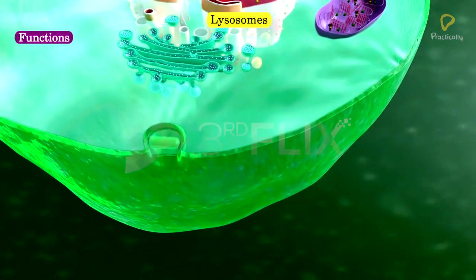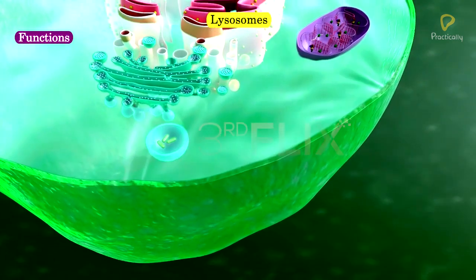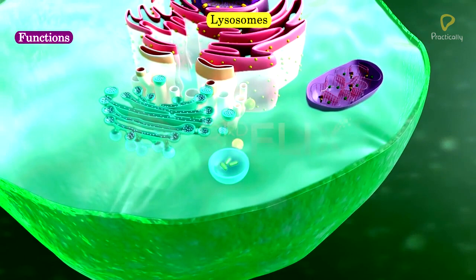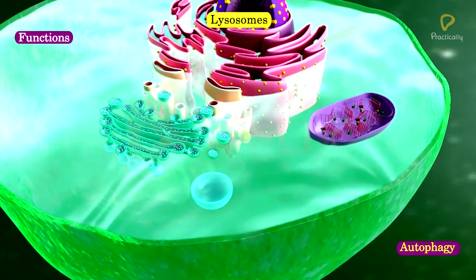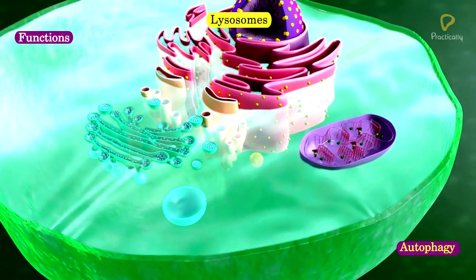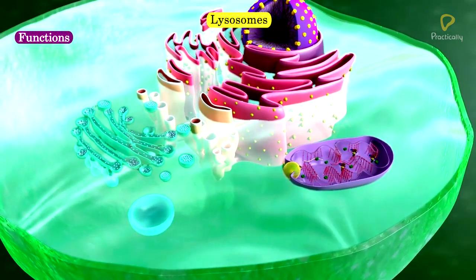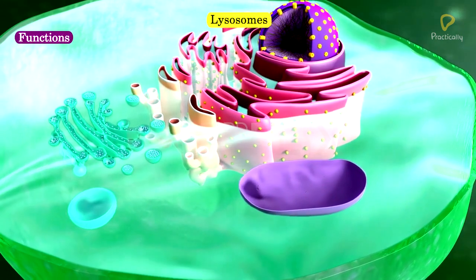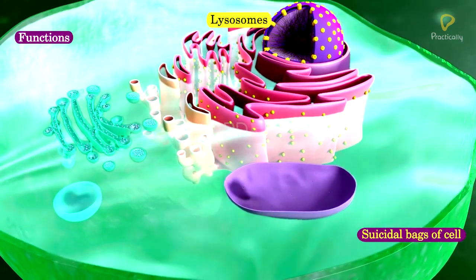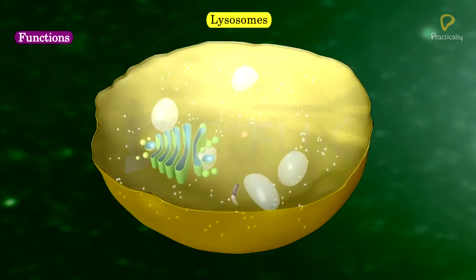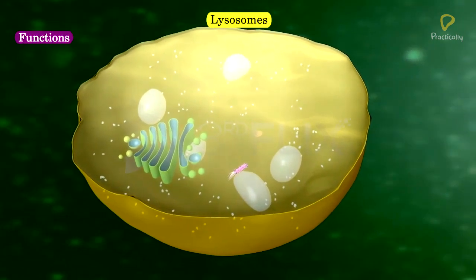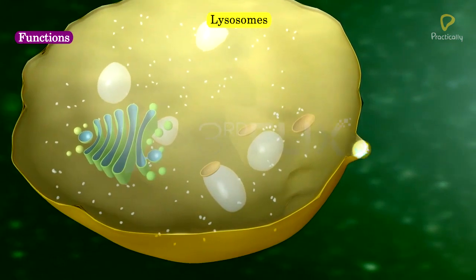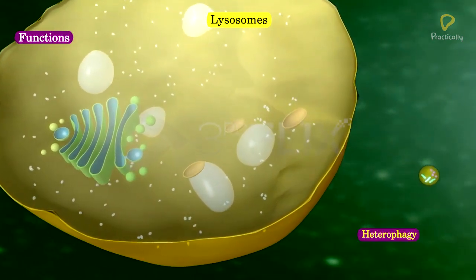Lysosomes play a vital role in intracellular digestion of food materials, a process called autophagy. During starvation of an organism, lysosomes initiate autolysis of cell contents; hence they are called suicidal bags of the cell. Foreign particles like bacteria and viruses are digested in certain leukocytes and macrophages, a process called heterophagy.